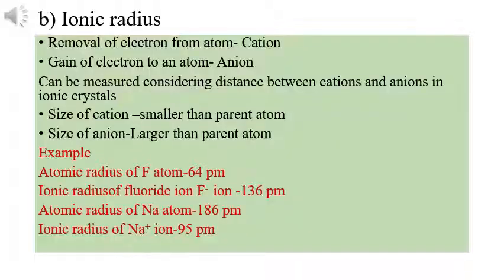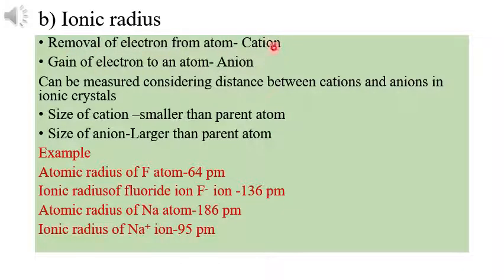Now we discuss ionic radius. What is an ion? If an atom loses an electron, it forms a cation. For example, sodium loses an electron to form its cation. In the case of chlorine or fluorine, if it gains an electron, it forms an anion.